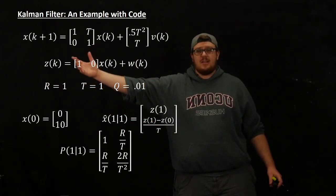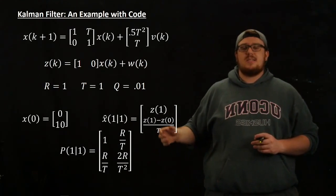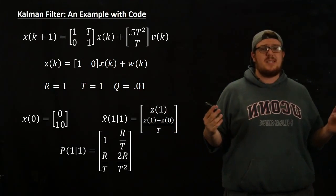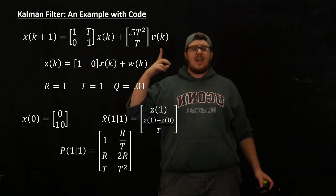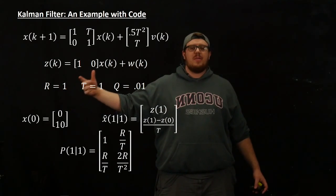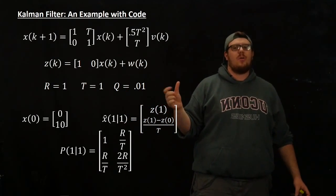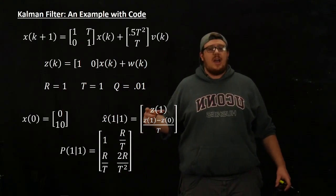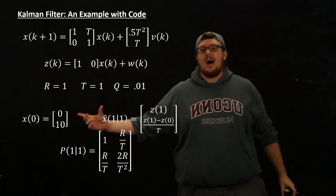And then the measurement that we're getting, you see here our measurement vector here, one zero, multiplying our x of k which is going to be position velocity, is that we're just getting position measurements. So we're going to try to estimate the position where we're measuring position, and obviously we get some noise. The variance of the v of k, which is dimension 1 by 1, so it's just a scalar, the variance of it is 0.01. And the variance of this noise is 1. And the t for the length of time that we're assuming between k and k plus 1 is 1 second.